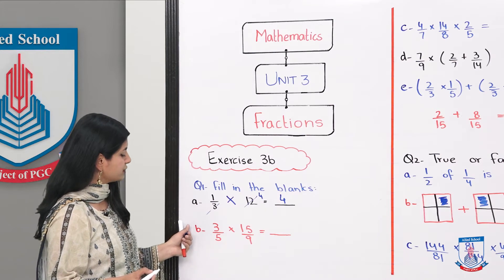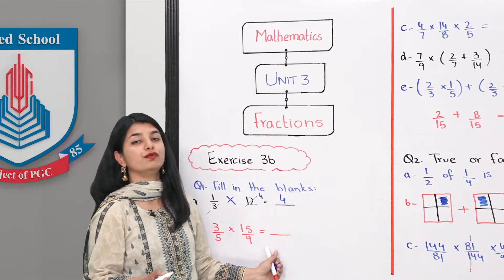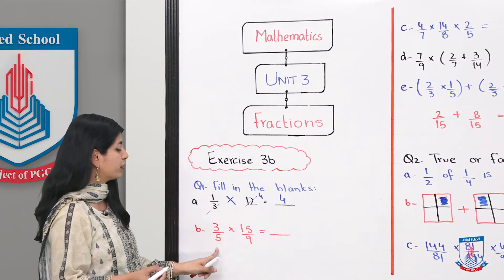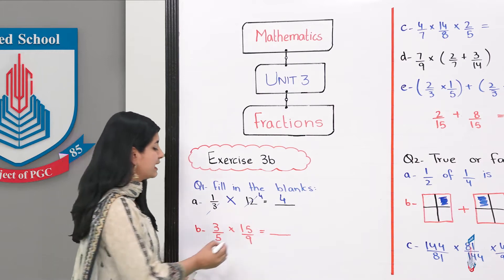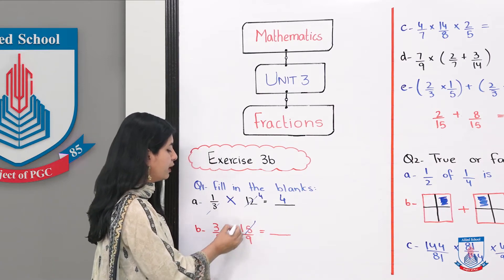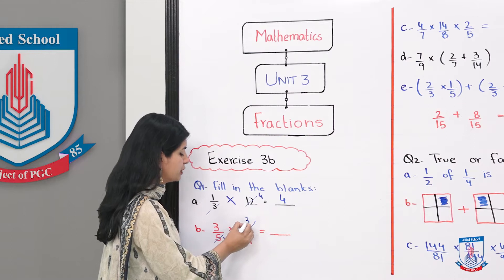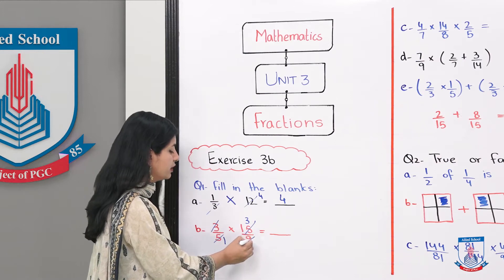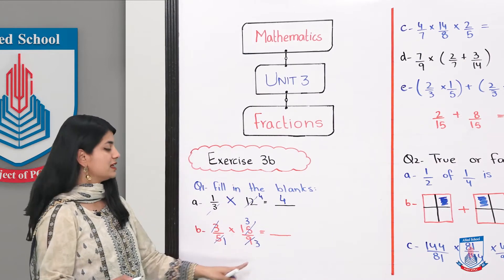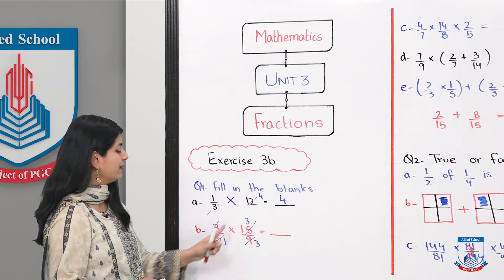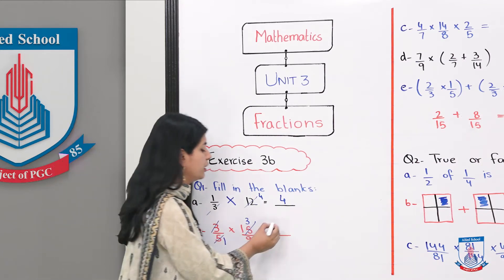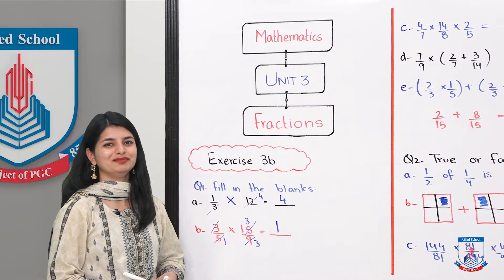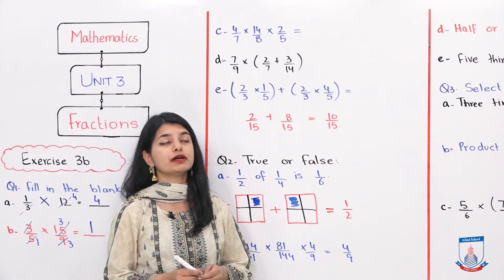The next question is 3 by 5 into 15 over 9. We can cancel out because 5 and 15 are in the same table — both divide by 5, leaving 1 and 3. Then 3 and 9 can also cancel by 3, leaving 1 and 3. So we only have 3 by 3 left, and 3 divided by 3 is 1. Your answer is 1.